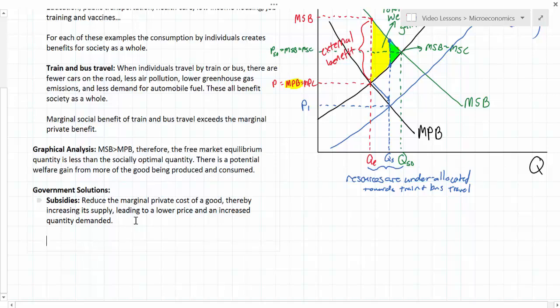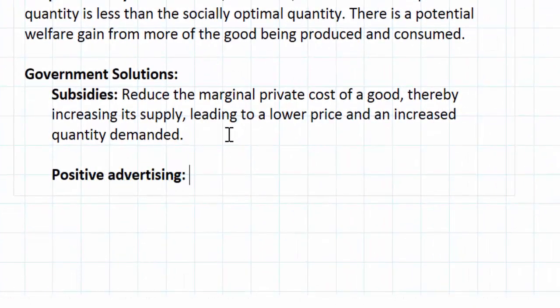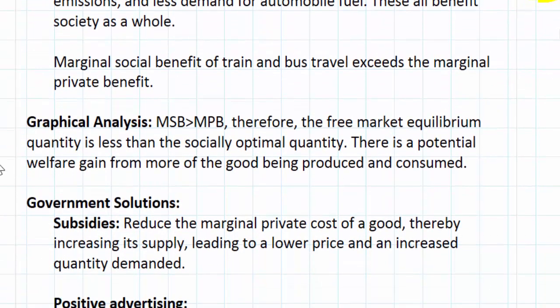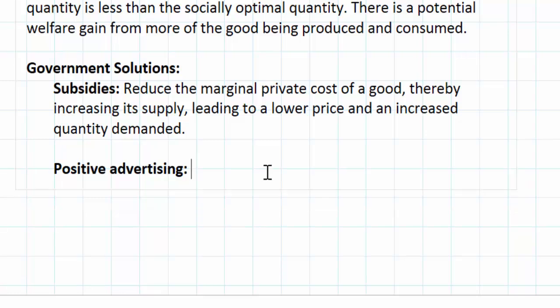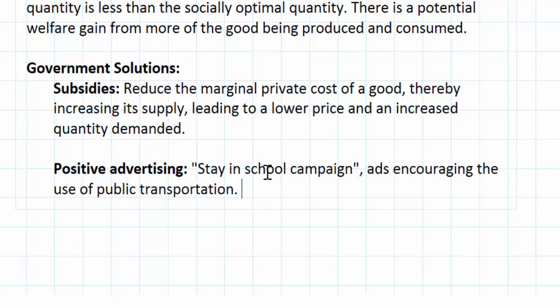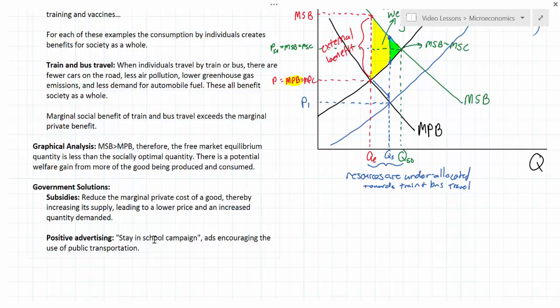There are other ways government can incentivize consumption as well. Positive advertising is one option — for example, 'stay in school' campaigns incentivize people to remain in school because education provides spillover benefits for society beyond those enjoyed by the individual getting the education. Positive advertising increases the marginal private benefit of a good, therefore increases demand, and reduces the gap between the equilibrium quantity and the socially optimal quantity.